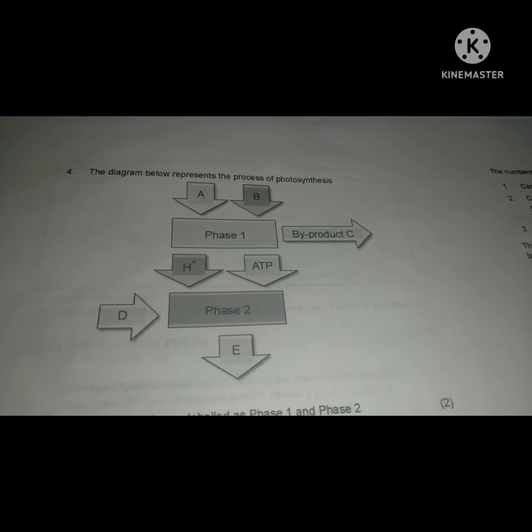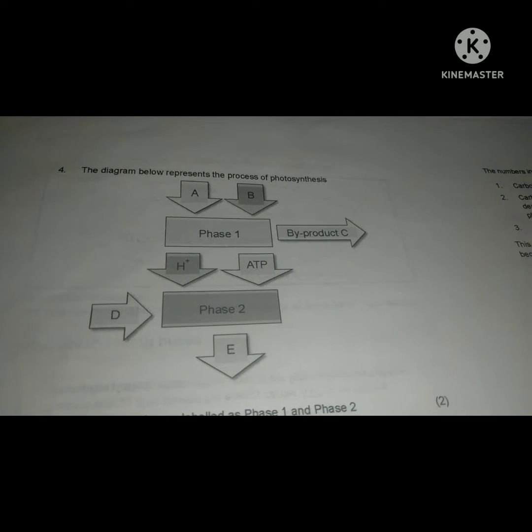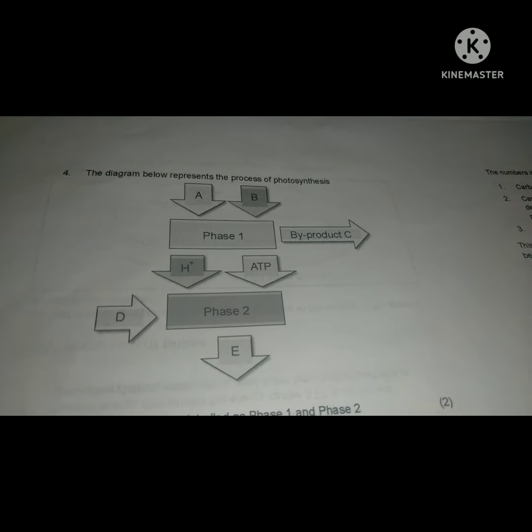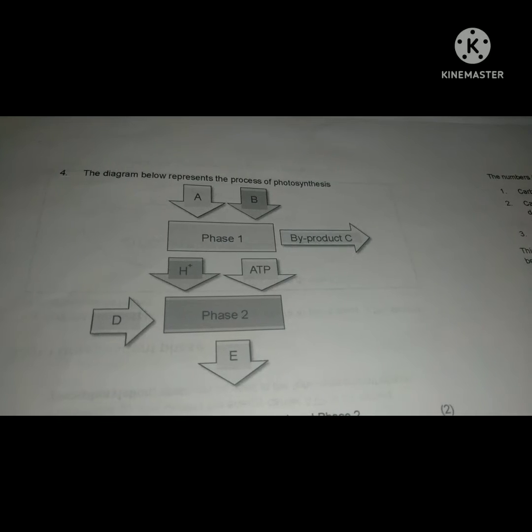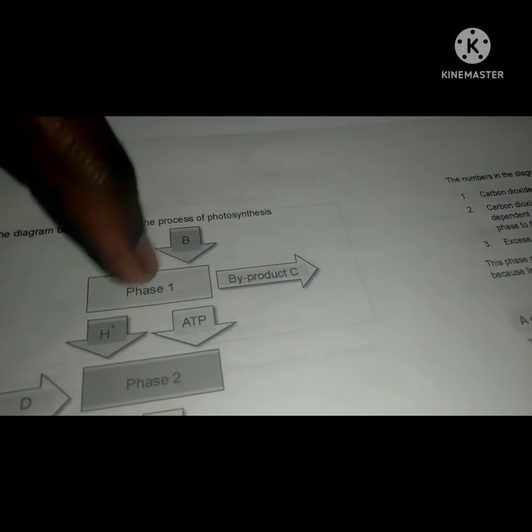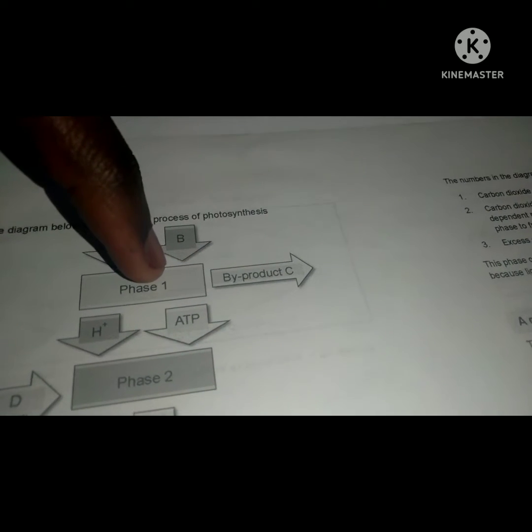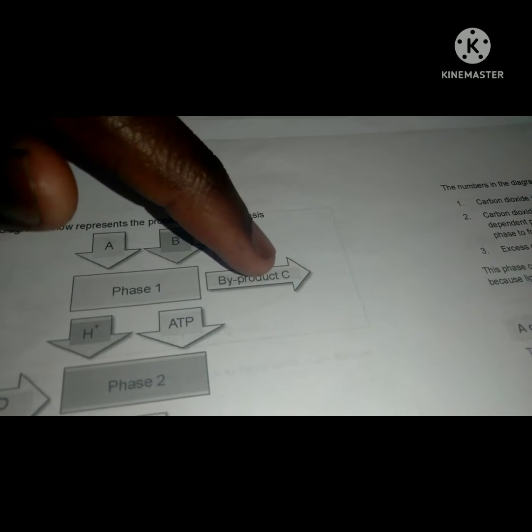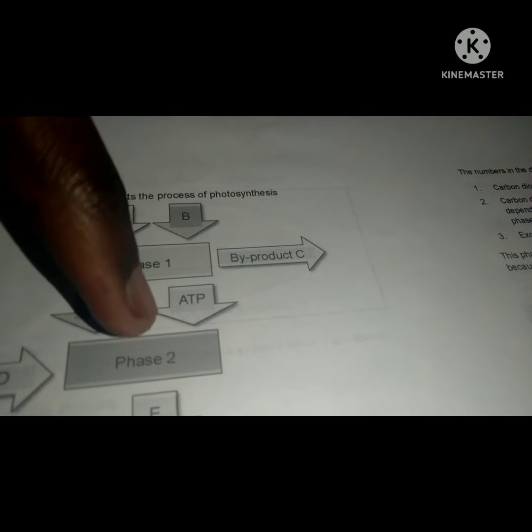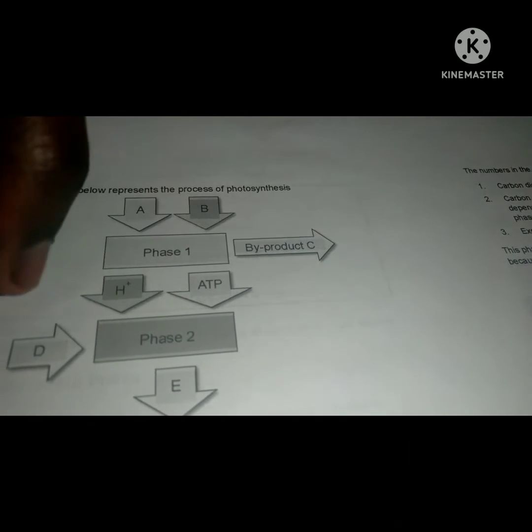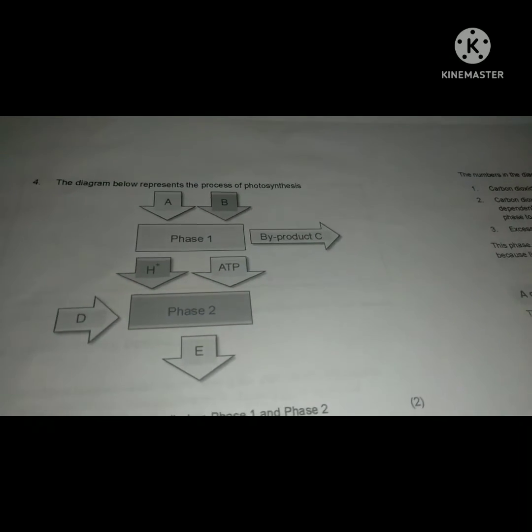Let us identify the required things based on our knowledge of the light and dark phases of photosynthesis. Here we find A and B that go into phase 1, then product C that goes away. H+ goes into phase 2, ATP into phase 2, and then D into phase 2, and E out of phase 2.